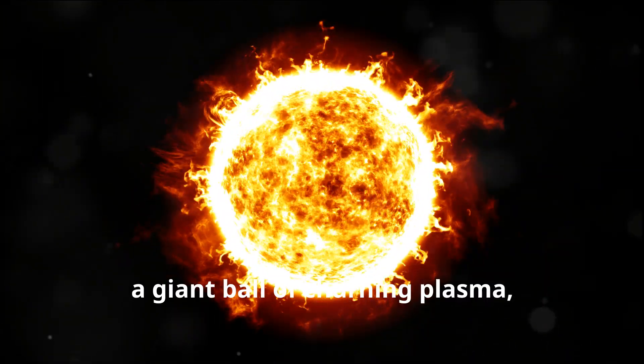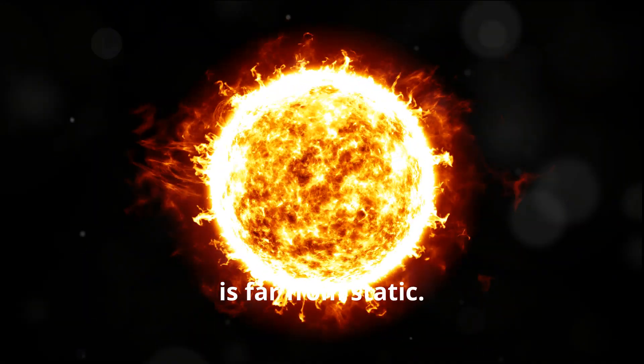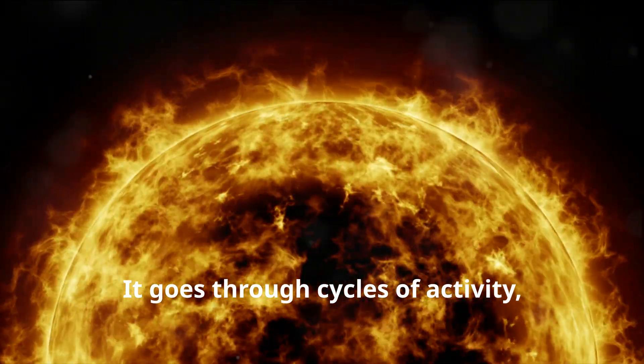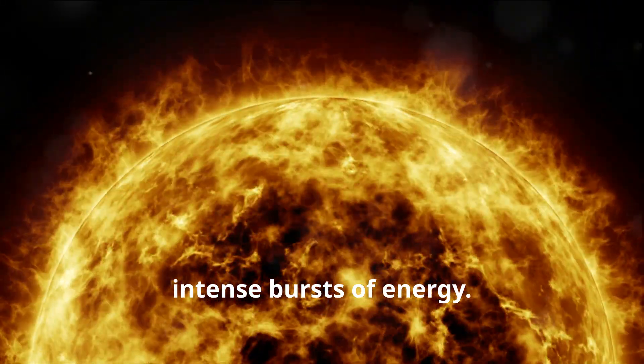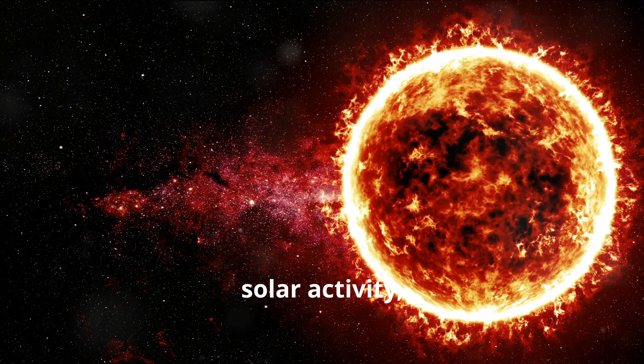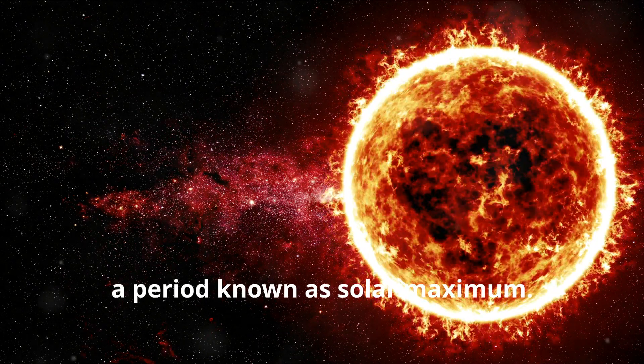Our sun, a giant ball of churning plasma, is far from static. It goes through cycles of activity marked by periods of relative calm and intense bursts of energy. We are currently witnessing a ramp up in solar activity, a period known as solar maxima.